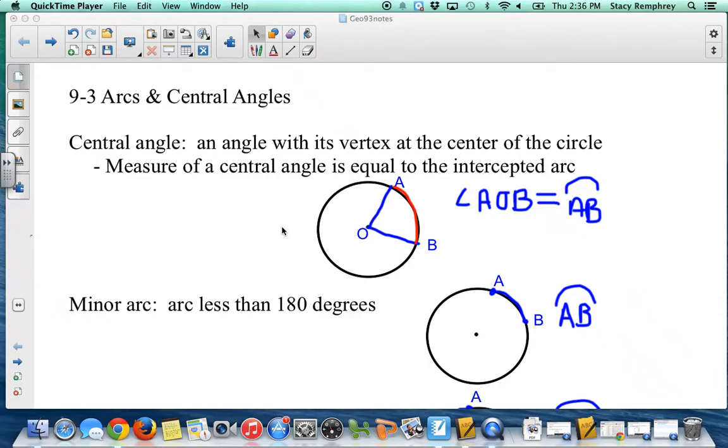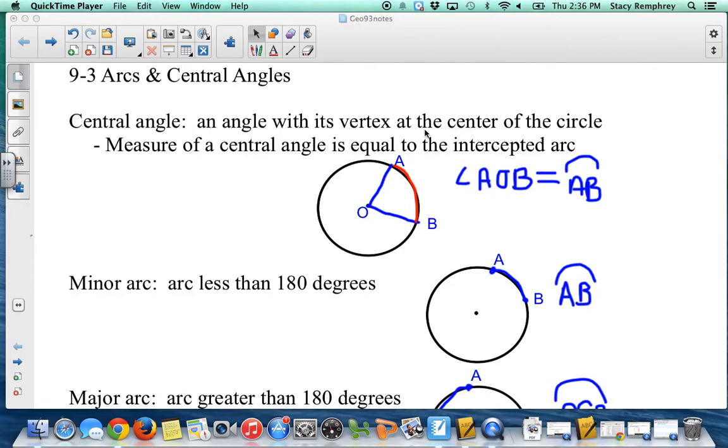Okay, these are the notes for 9.3. A lot of definitions coming back in. So a central angle of a circle is an angle with its vertex at the center of the circle. So angle AOB here is an example of a central angle. And the measure of a central angle is equal to the intercepted arc.